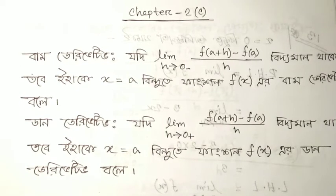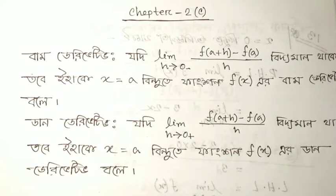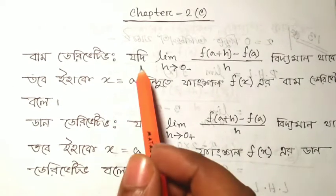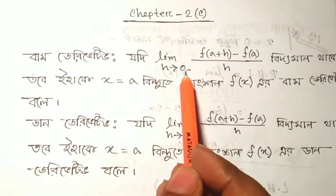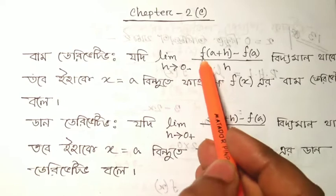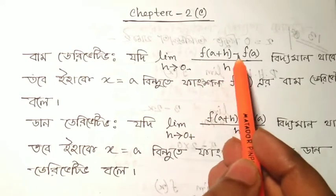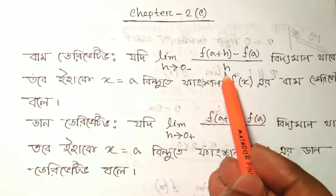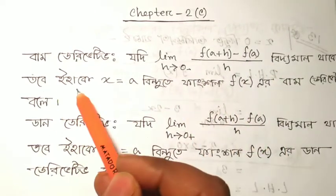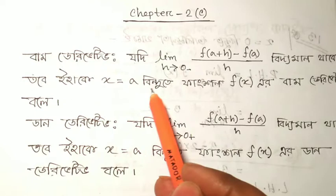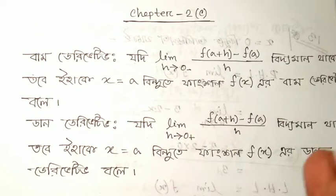We are going to talk about the BAM derivative and DUN derivative. The BAM derivative is the limit: if the limit is 0, f(a + s) minus f(a) divided by s. Then we have x equals a function f of x.